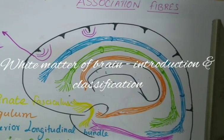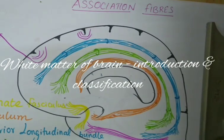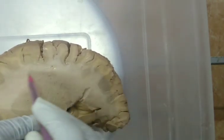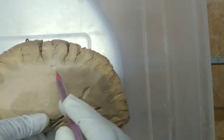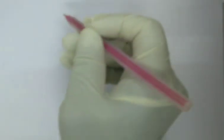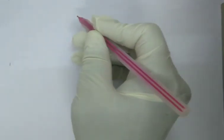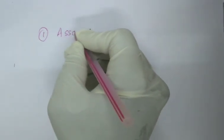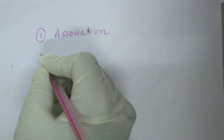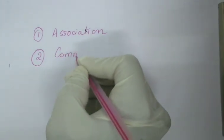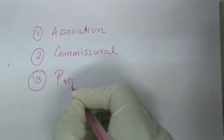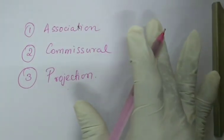Good morning. In this video, we will study about the white matter of brain. The white matter of brain is present deep to the cerebral cortex. You can see this is the cerebral cortex and this is the white matter of brain. This white matter is made up of a lot of nerve fibers and the neuroglia. The white matter of brain can be classified into three basic types of fibers.